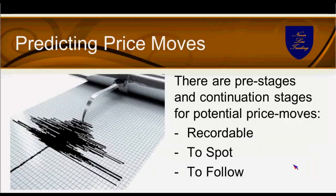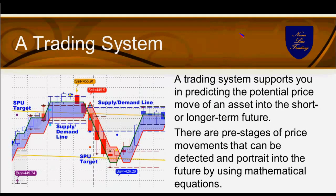There is a pre-stage and a continuation stage that is recordable — you can spot when things happen and follow them. You just need the right understanding of how it works. A trading system supports you in predicting the potential price move in the future, short or longer term. With pre-stages justified by price changes, volume changes, and statistical volatility changes, we can use specific math that I developed over the years in finding those spots.